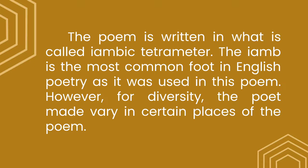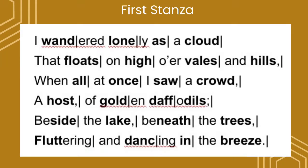This is the first stanza of the poem. The bold letters are considered the stressed syllables, while the unbold letters are the unstressed syllables. In this particular stanza, from the first line to the fifth line, it has iambic tetrameter — unstressed then followed by stressed, with four feet or divisions in each line of the stanza. On the other hand, the last line, the sixth line of the stanza, is dactyl, because from the word 'fluttering' it has three syllables — stressed then followed by two unstressed syllables.